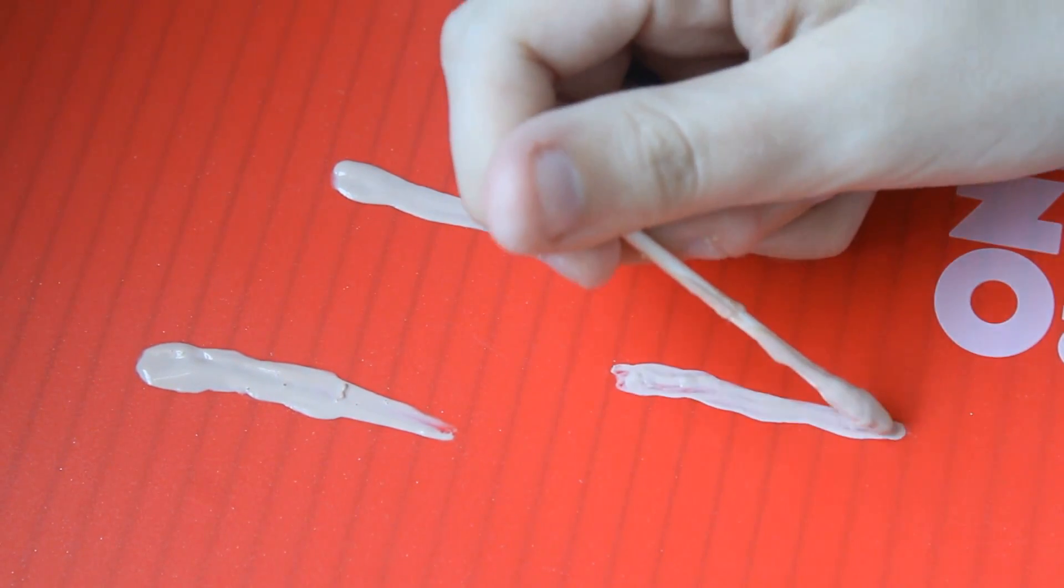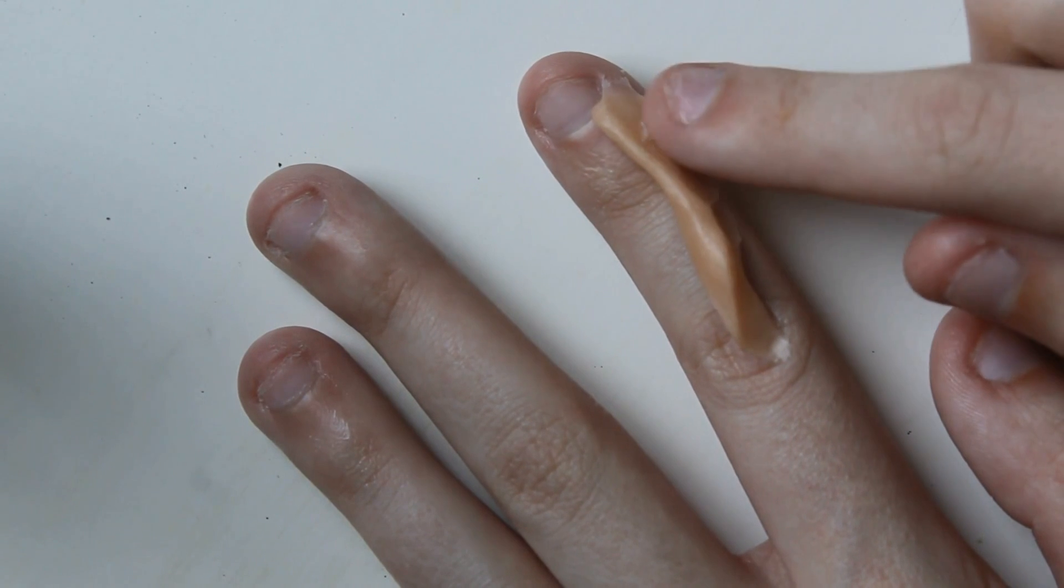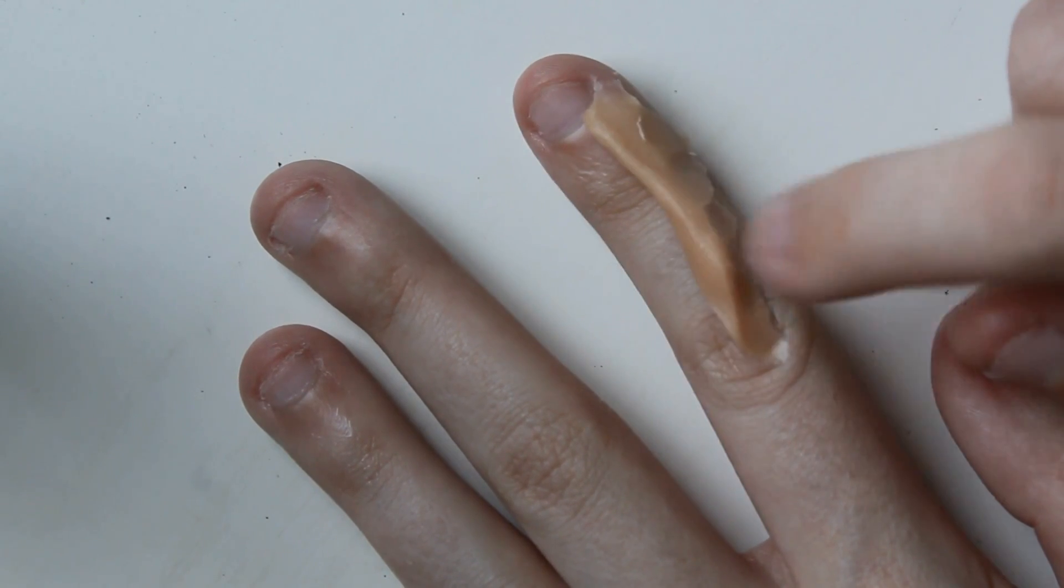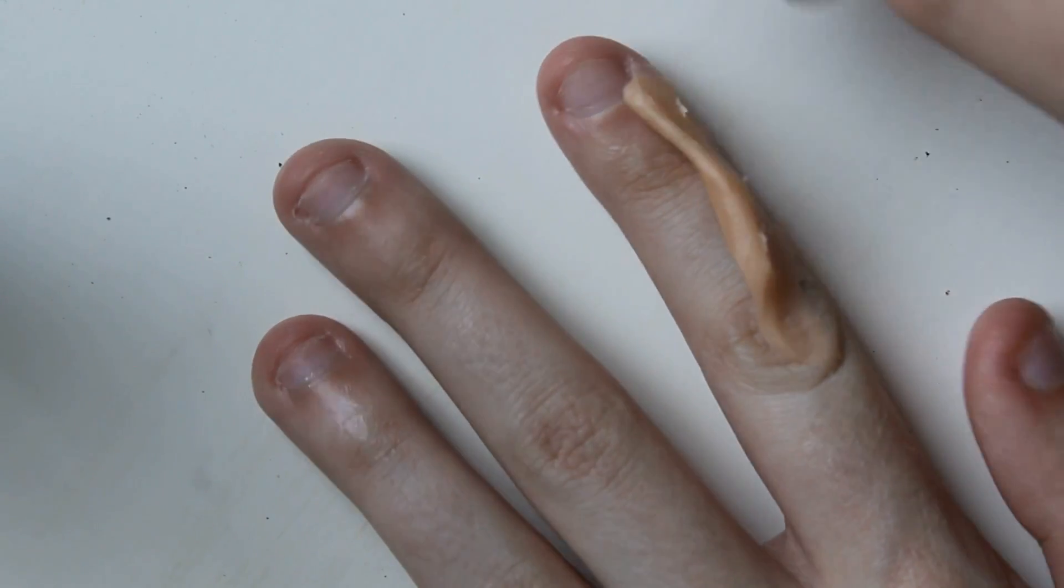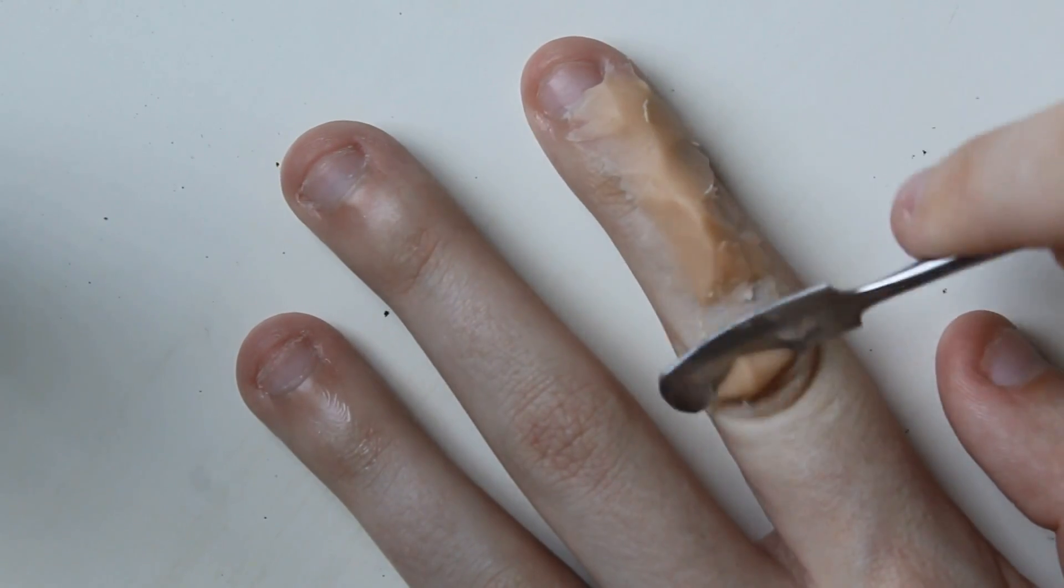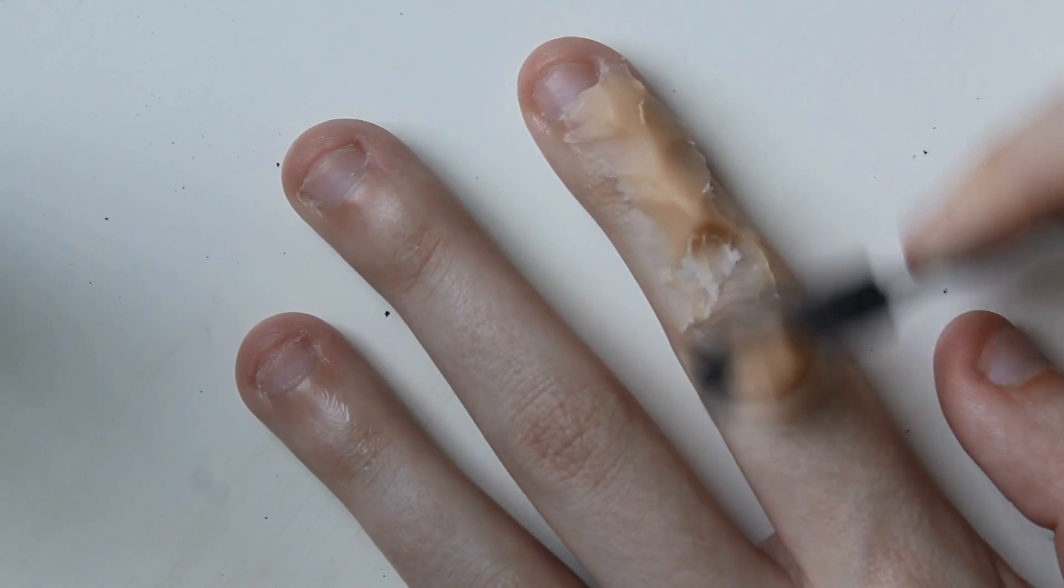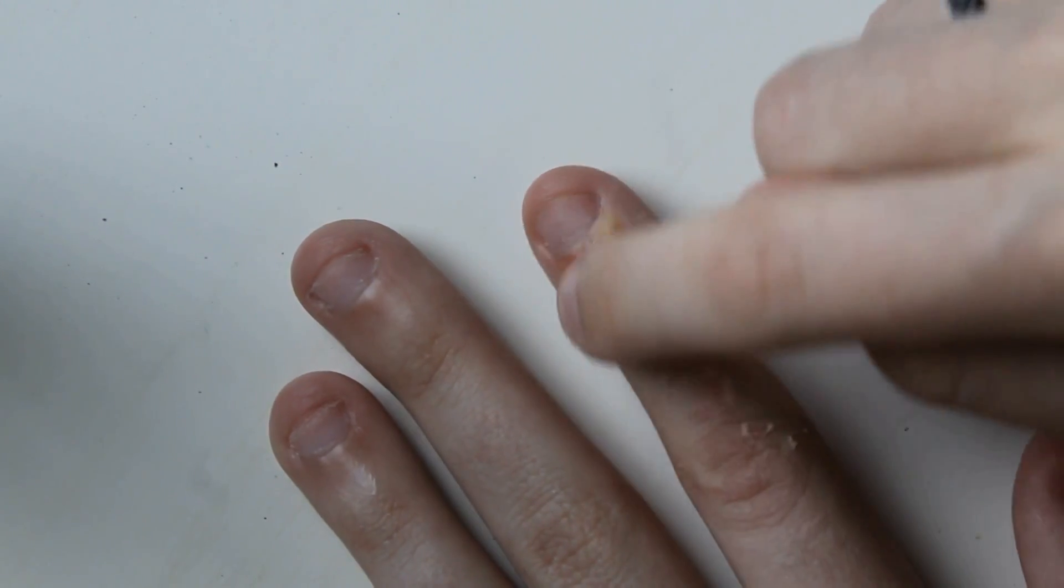To create the rip part, I'm taking some scar wax and blending it out on my finger. I'm making sure I have a lot of Vaseline on my fingers so it doesn't get stuck. I'm using my finger to blend it out, then I use a spatula to remove any excess.